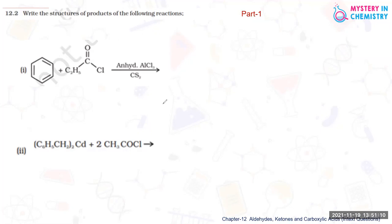Question number 12.2: Write the structures of the products of the following reactions. So here the reactants are given and we have to write the product. In the first part, we are taking the first and second reactions. In the first reaction, it is benzene which is reacting with propanoyl chloride.